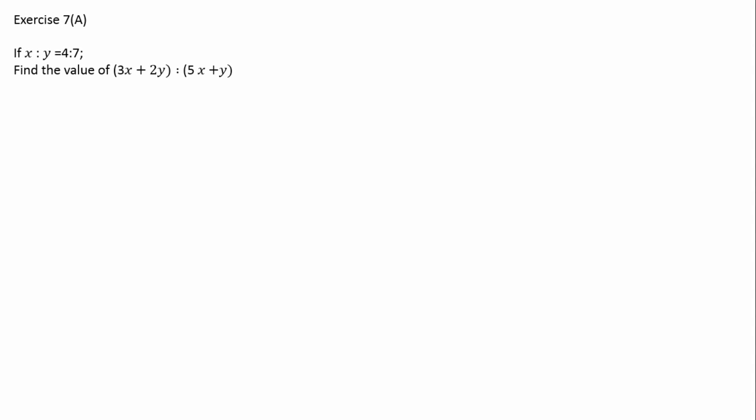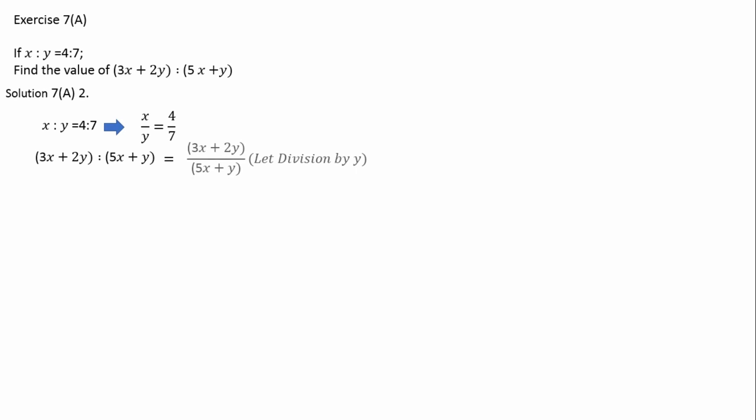Now here in question number 2, x is to y is equal to 4 is to 7. We can also write this as x/y = 4/7. The question is asking for (3x plus 2y) over (5x plus y). If we divide this by y, the numerator becomes 3x/y plus 2, since y/y cancels to give 3x/y plus 2. Similarly, in the denominator, this will become 5x/y plus 1. This is the result after division by y.